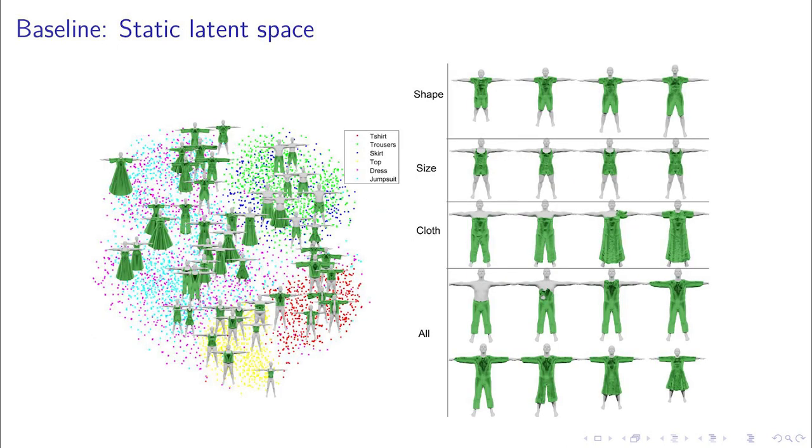We demonstrate that our static model is able to learn a meaningful space with respect to garment type. In the left image, we see a projection of the learned static latent space into a two-dimensional space. We can see a meaningful distribution of samples according to their garment type and topology. Additionally, this latent space allows interpolation between different static features.